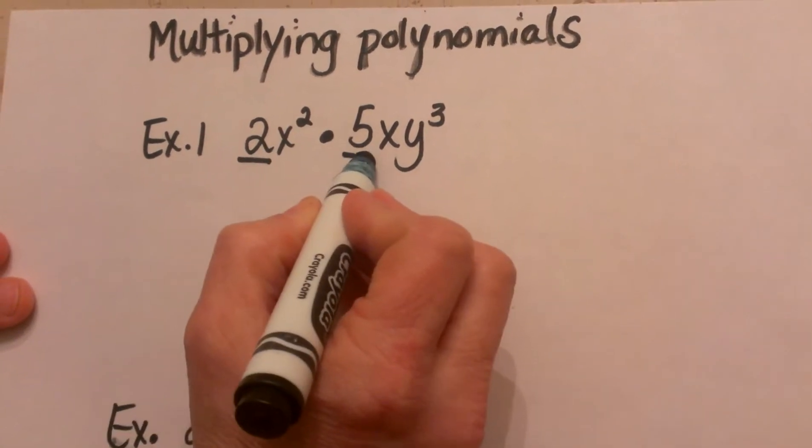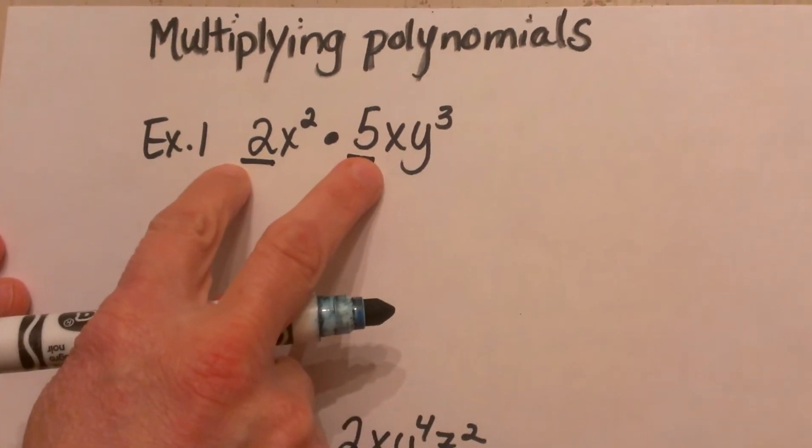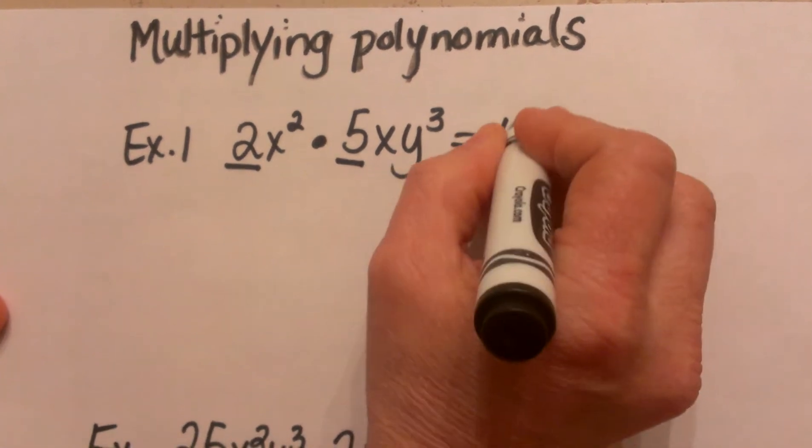The rules are you multiply the coefficients. So I am going to multiply 5 and 2 together to get 10.